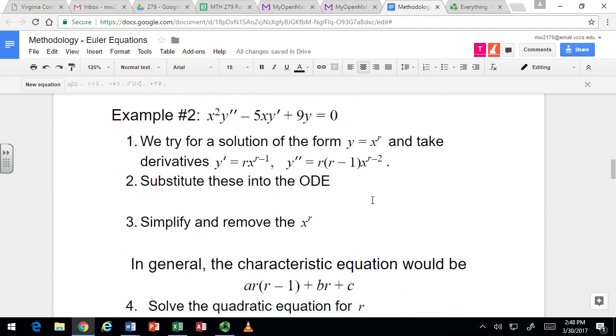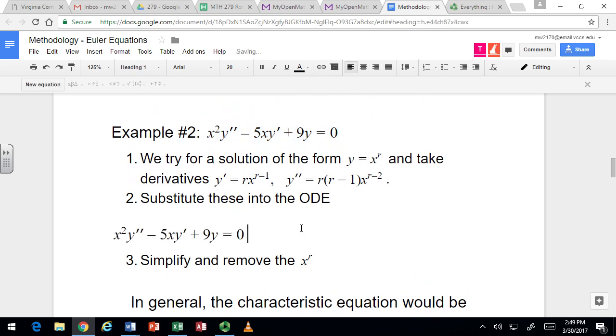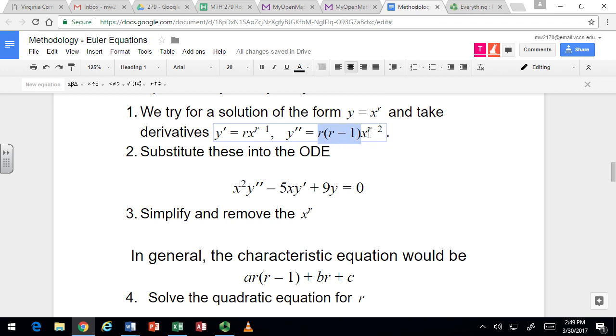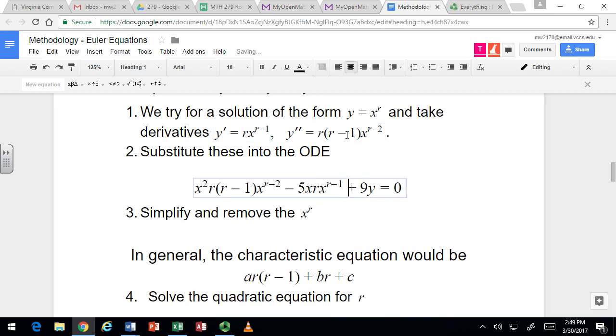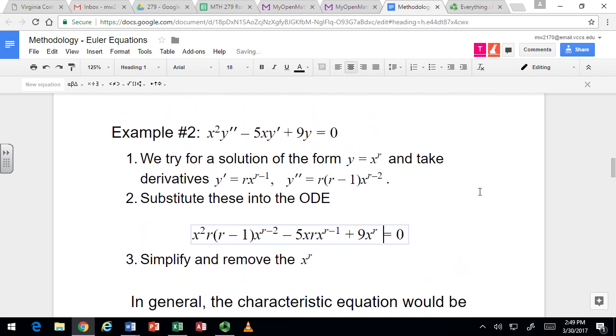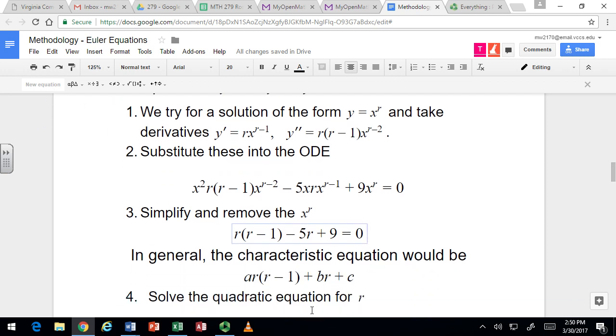Let's take a look at another example where we won't get two real distinct solutions to the characteristic equation. Again, you can substitute these things into the differential equation and get your characteristic. And hopefully at some point you're able to notice the shortcut directly to the characteristic. So the differential equation is x squared y double prime minus 5xy prime plus 9y equals 0. In this case a is 1 and b is negative 5 and c is 9 if you're using that formula.